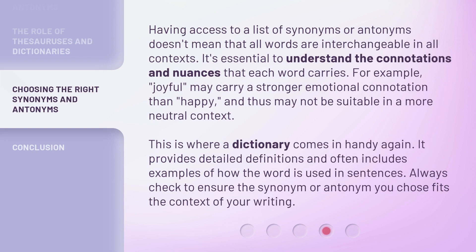Having access to a list of synonyms or antonyms doesn't mean that all words are interchangeable in all contexts. It's essential to understand the connotations and nuances that each word carries. For example, joyful may carry a stronger emotional connotation than happy, and thus may not be suitable in a more neutral context. This is where a dictionary comes in handy again. It provides detailed definitions and often includes examples of how the word is used in sentences. Always check to ensure the synonym or antonym you chose fits the context of your writing.